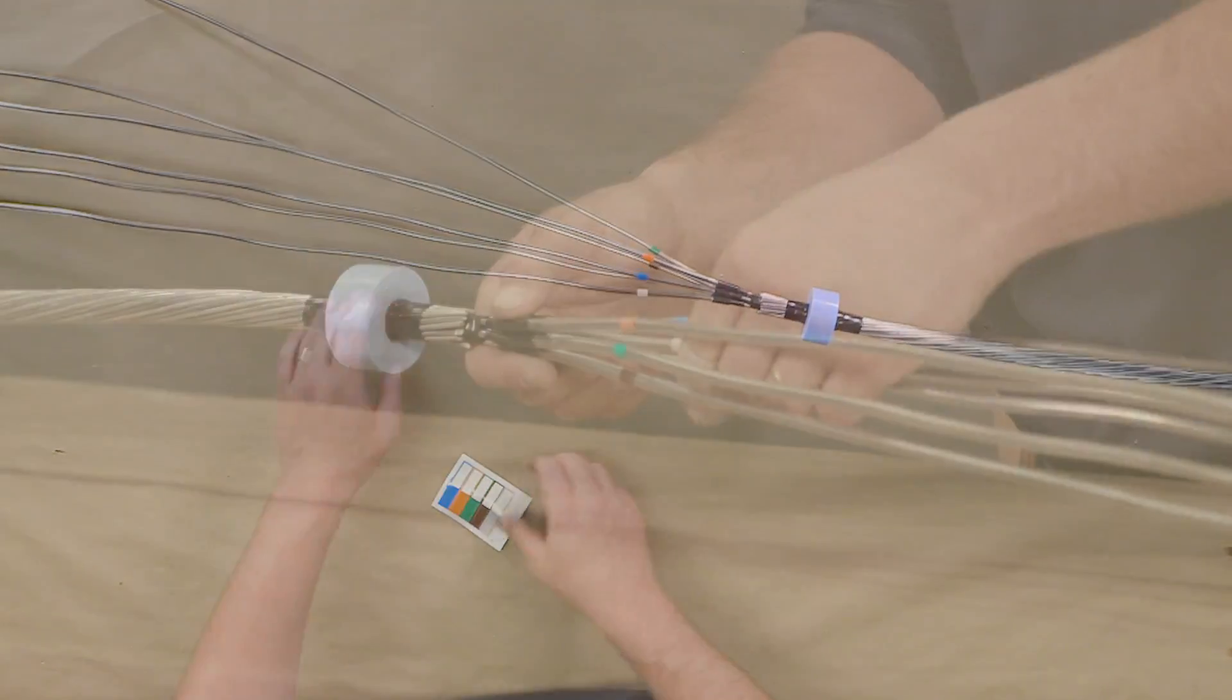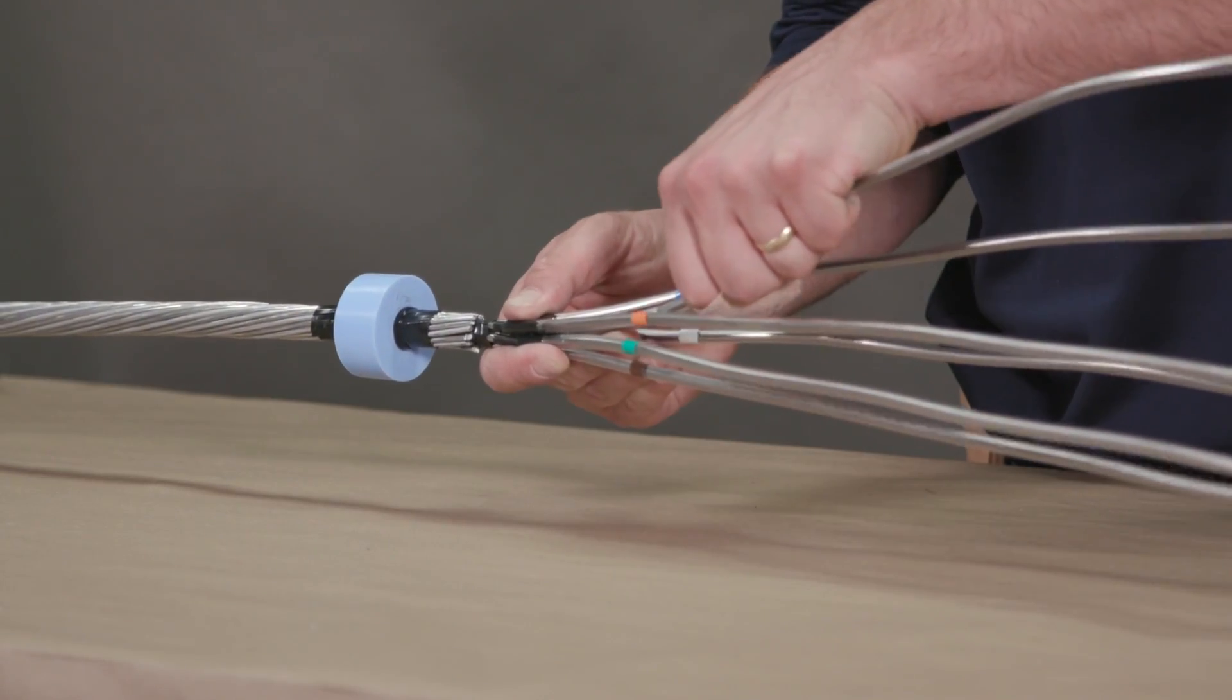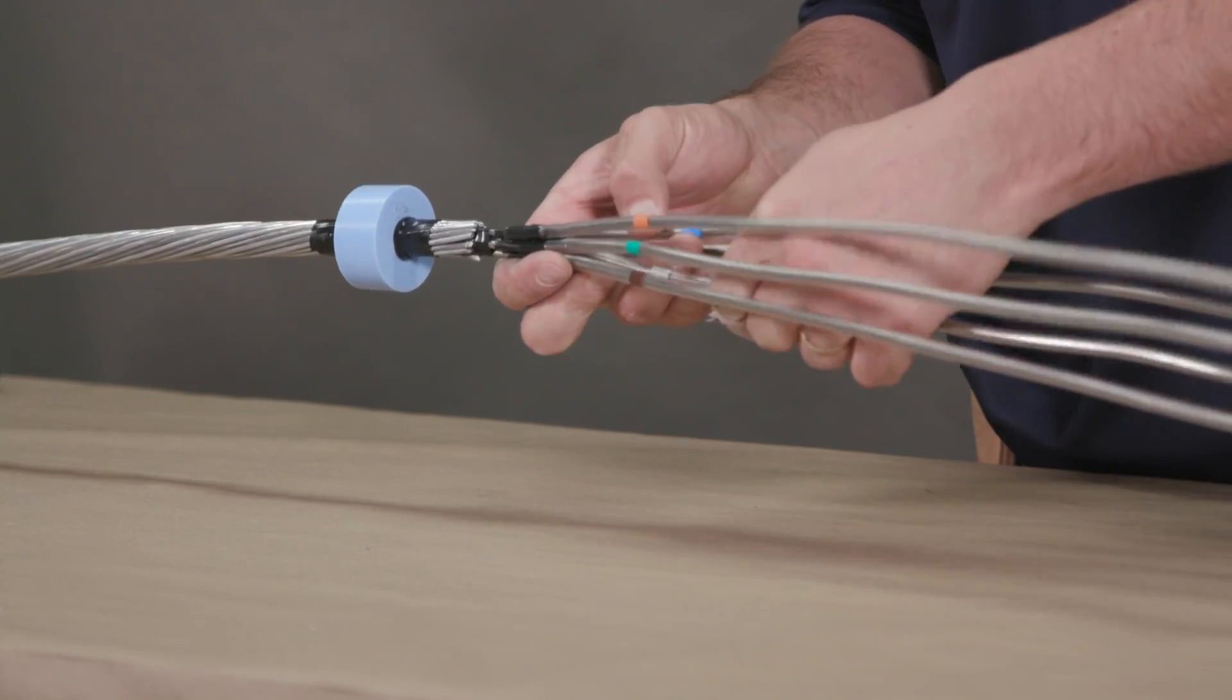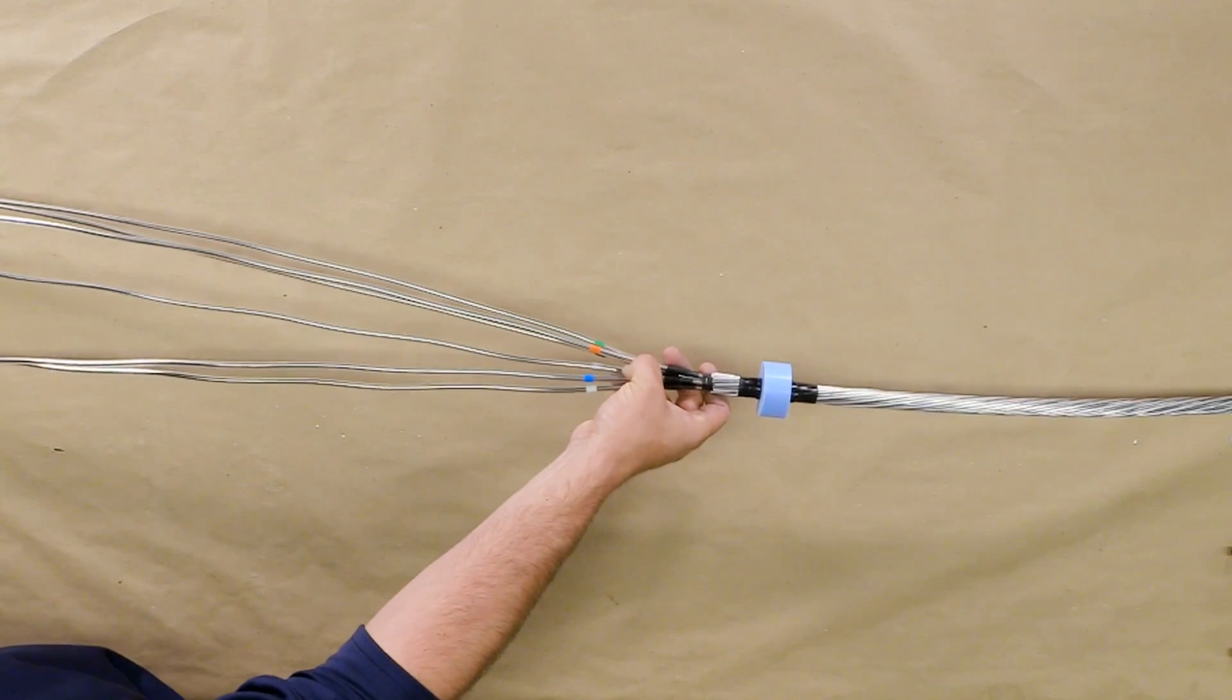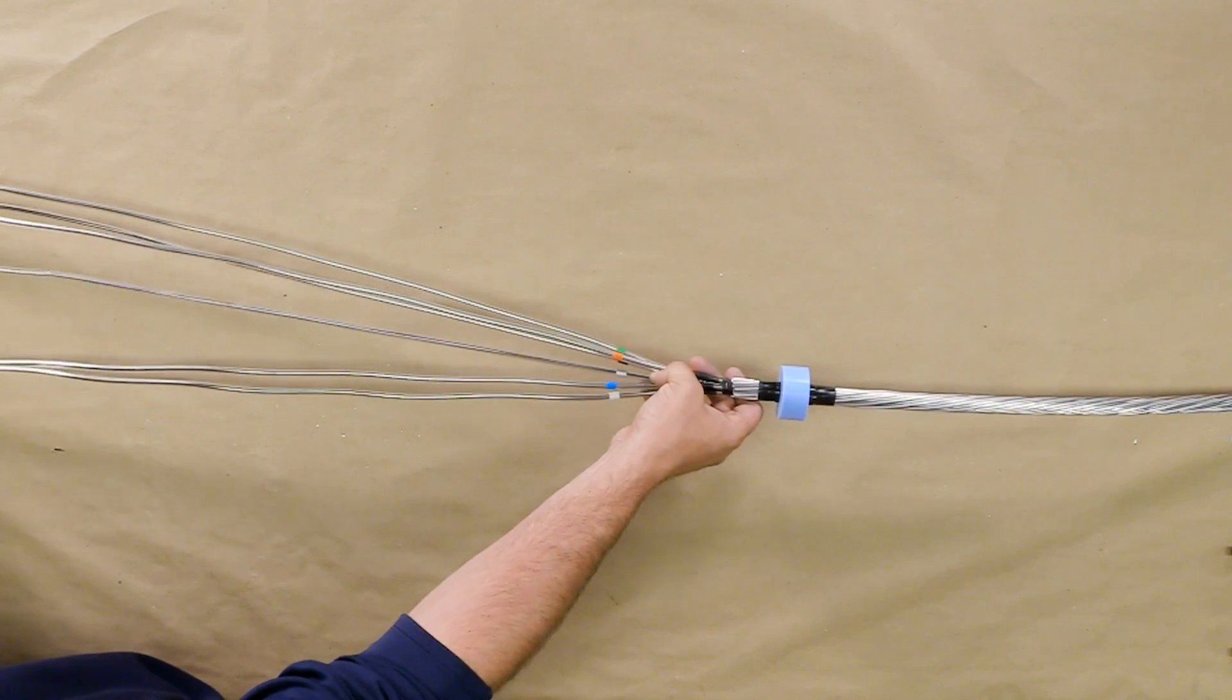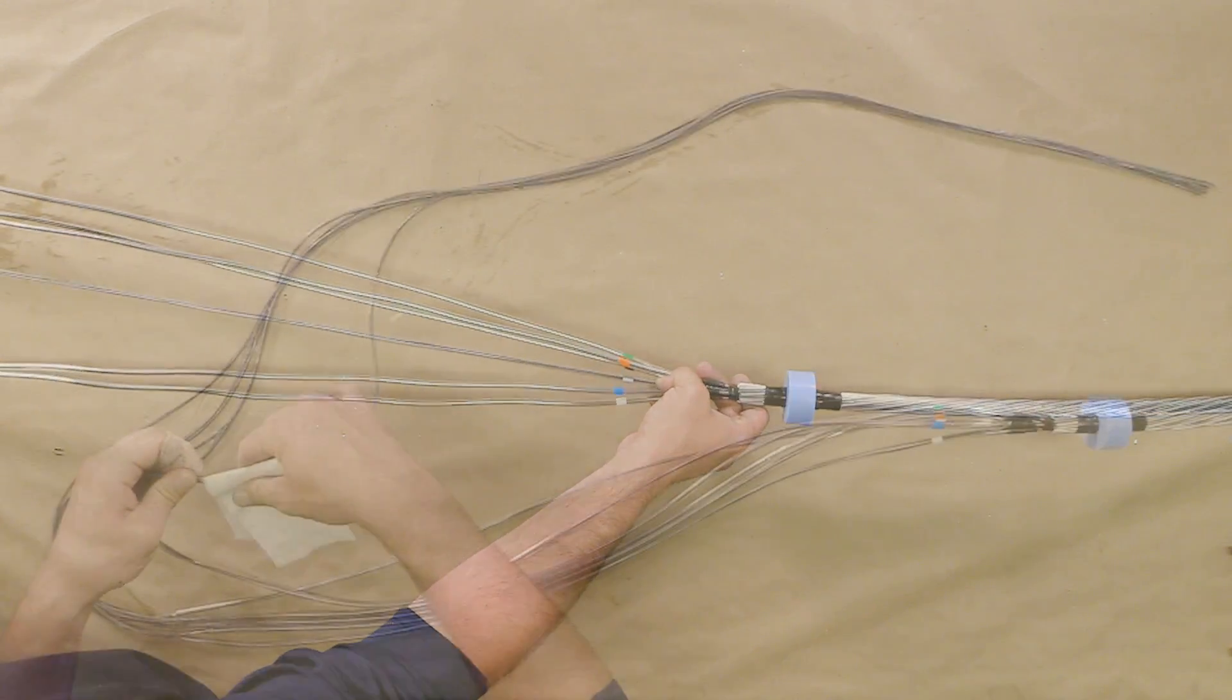Break stainless steel buffer tubes at previously scored location and discard. Clean fibers per your company's practice.